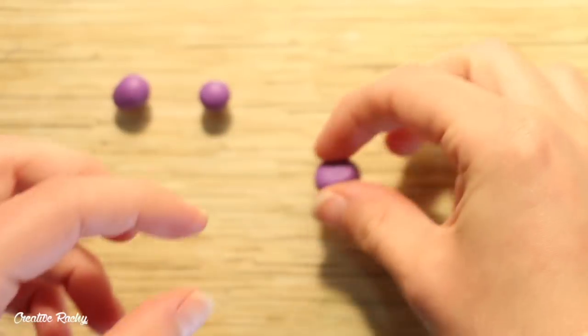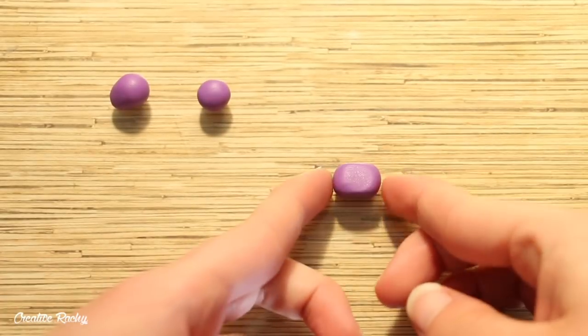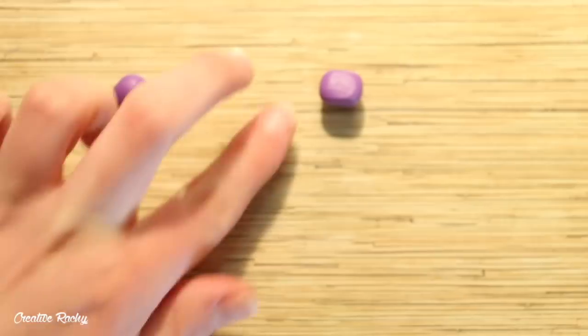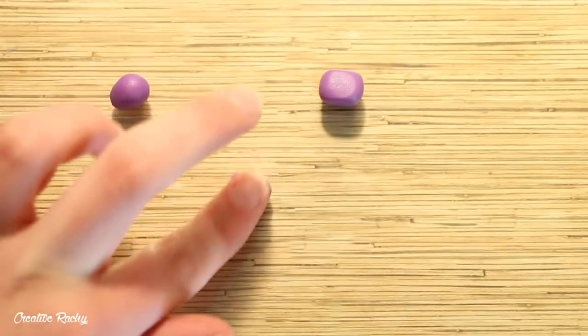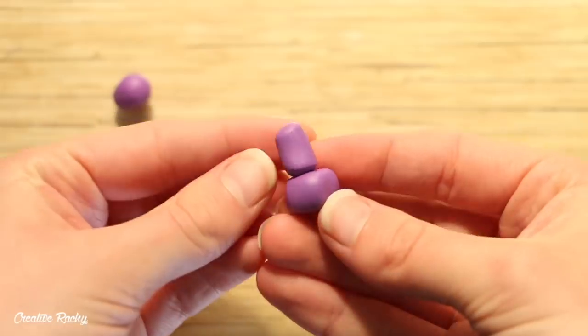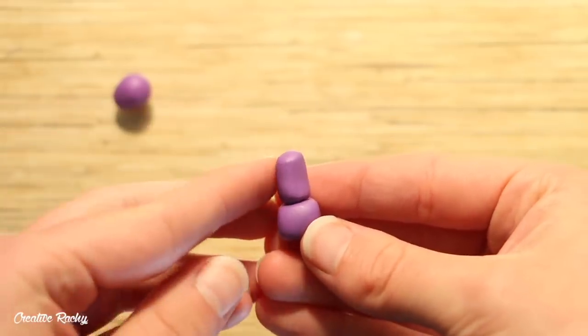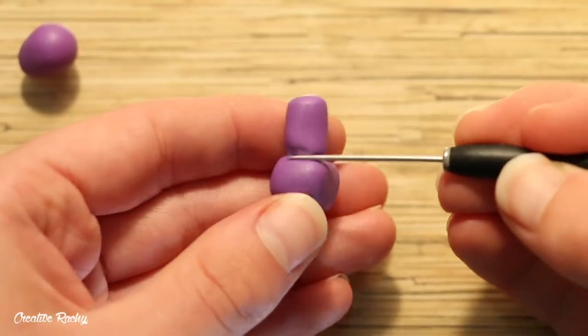The first one we're going to shape into a rectangular prism for the body. For the next section you'll need to roll it into a cylinder and then attach it onto the body. I've blended the pieces together and you don't need to worry if it looks a little messy because it will be covered up later anyway.